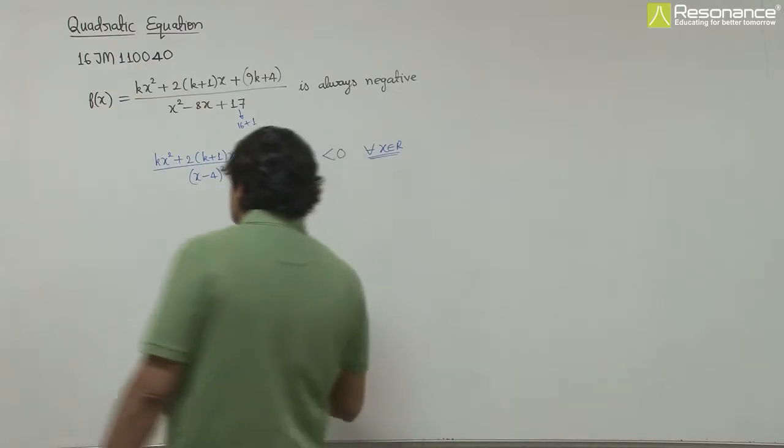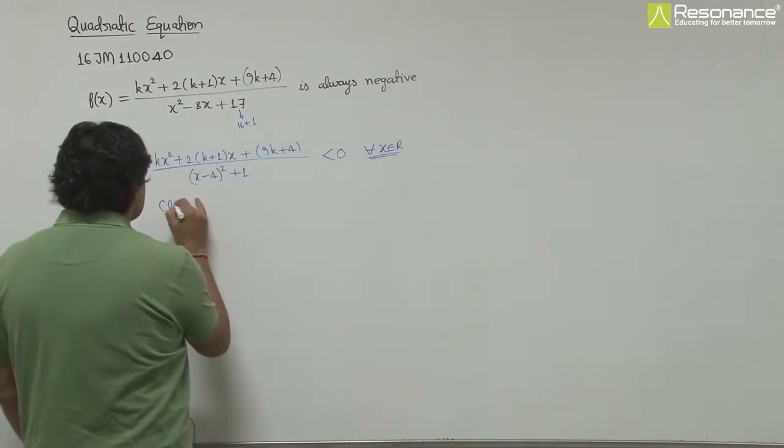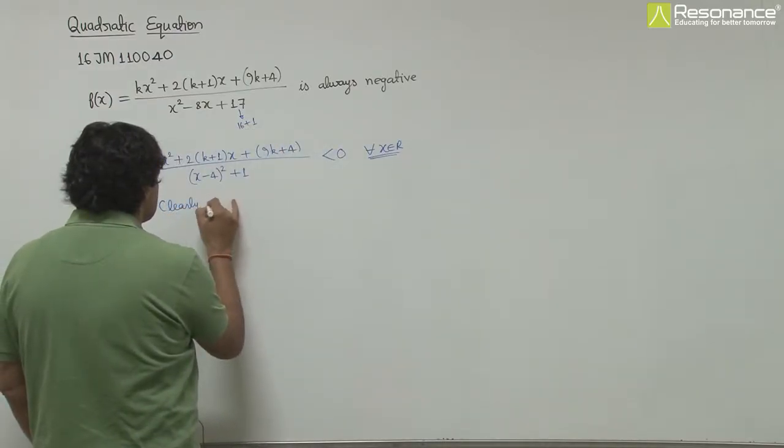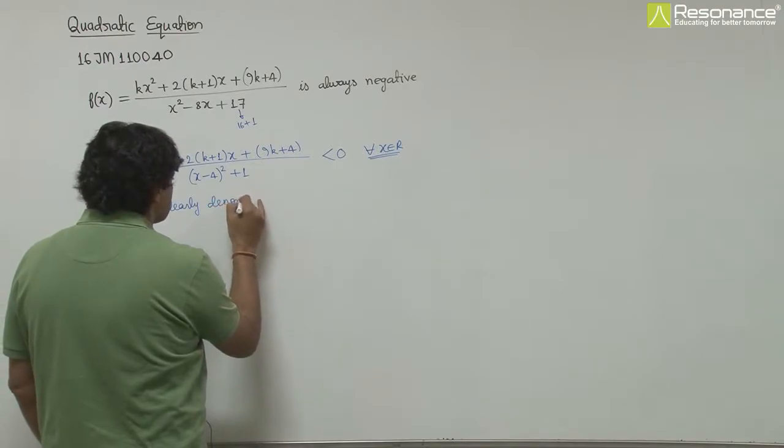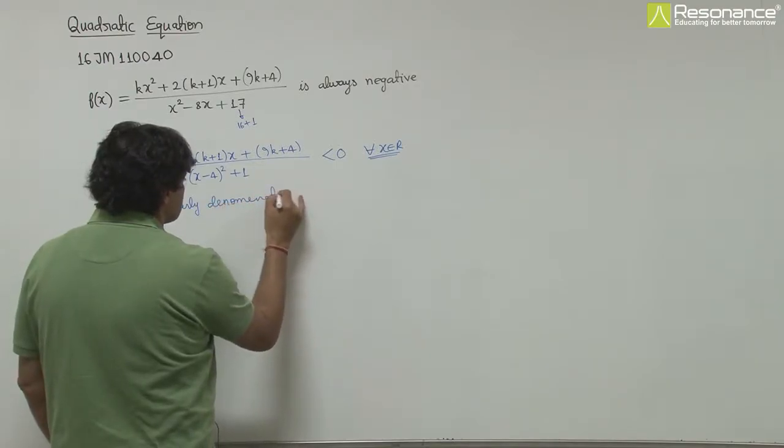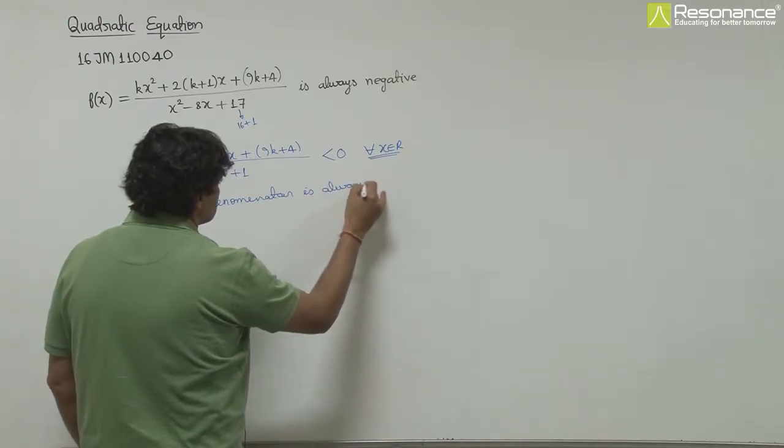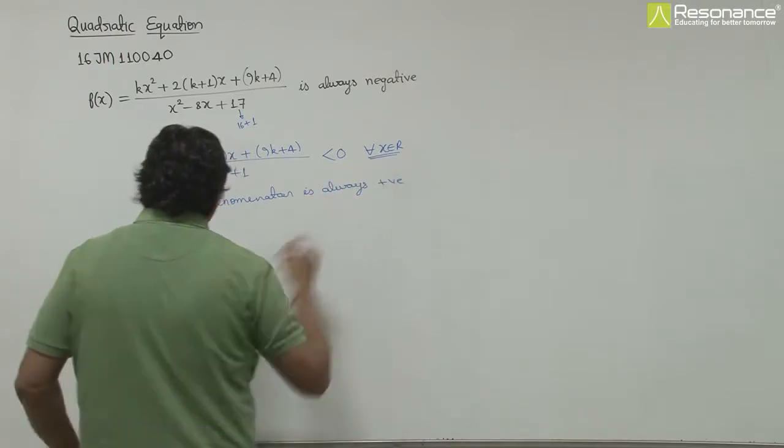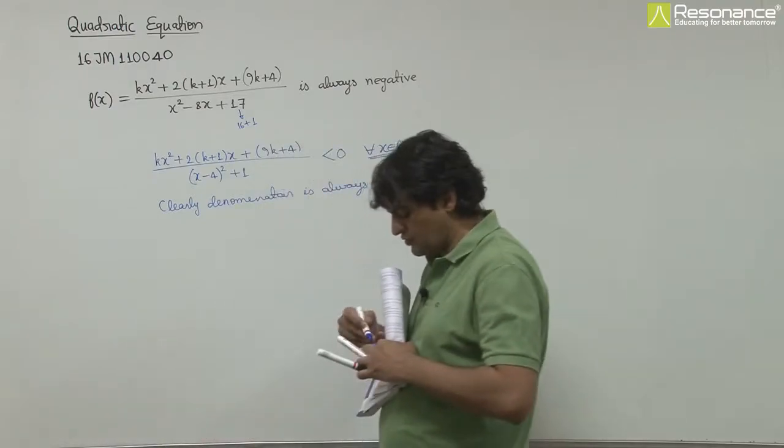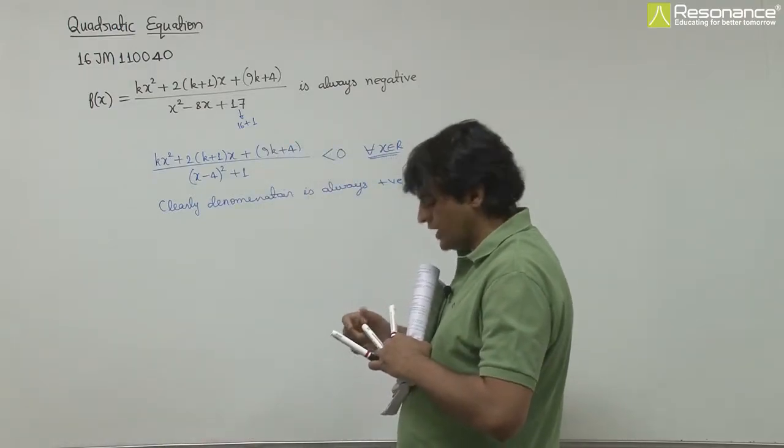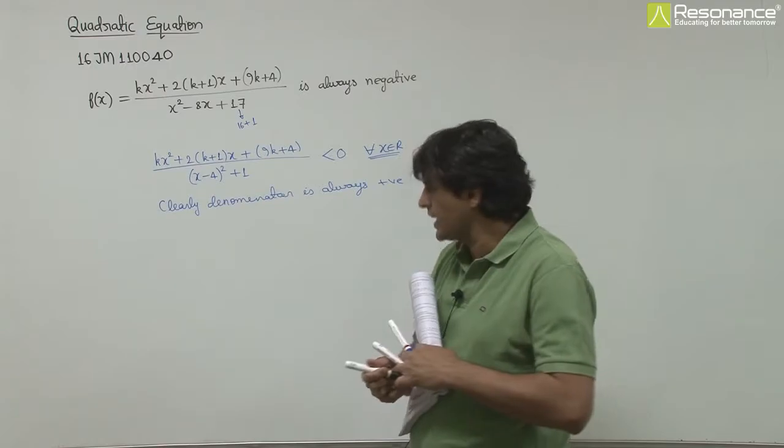The denominator is clearly positive. The denominator is (x-4)² + 1, so definitely it is positive. That means the numerator should be negative.